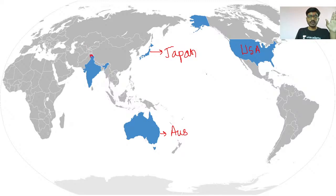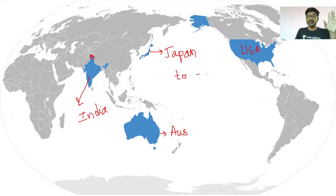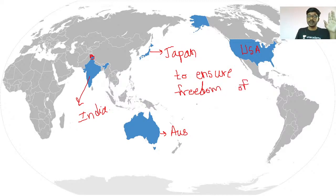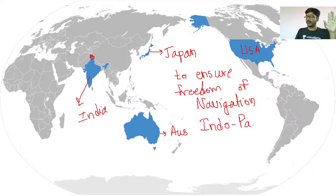India is part of the Quad Group. The objective is to counter China or to ensure that freedom of navigation is maintained. Freedom of navigation is maintained in the Indo-Pacific region.